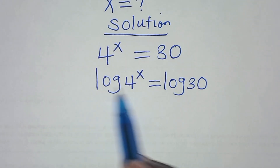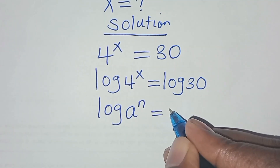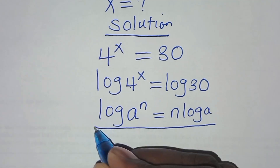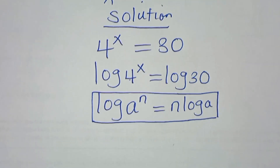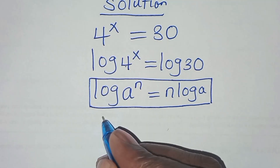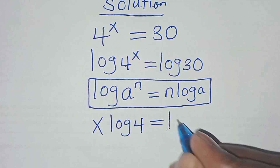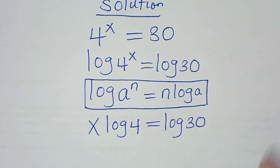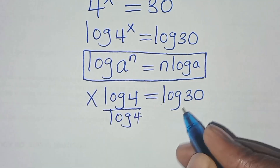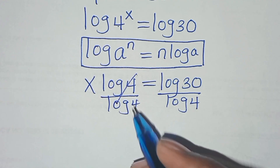The next step: log 4 to the power x is in the form of log a to the power n, which we can express as n·log a. So applying this power property of logarithm, log 4 to the power x becomes x·log 4, and this equals log 30.